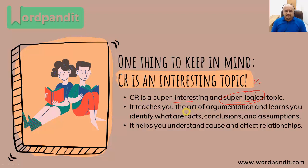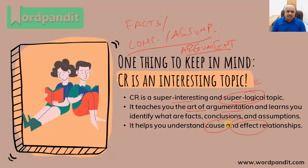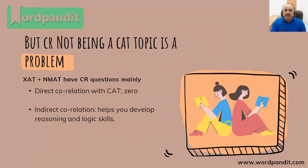It is super interesting and super logical as well. There is defined logic in critical reasoning — how do you solve problems? It teaches you something very very important, which is the art of argumentation. You learn to identify in critical reasoning what are facts, what are conclusions, what are assumptions, and how these three add up to create an argument — how authors build arguments. You learn cause and effect relationships, what leads to what. But since it is not a direct question type in CAT, its direct correlation with CAT is zero.